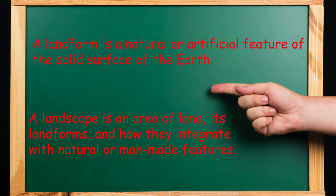Firstly, let's start off with some definitions. A landform is a natural or artificial feature of the solid surface of the earth. Landforms together make up a given terrain, and their arrangement in the landscape is known as topography. A landscape is the visible features of an area of land, its landforms, and how they integrate with natural or manmade features.